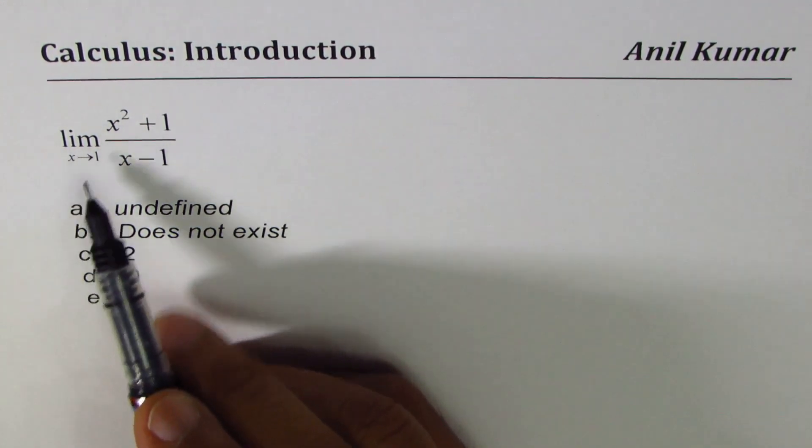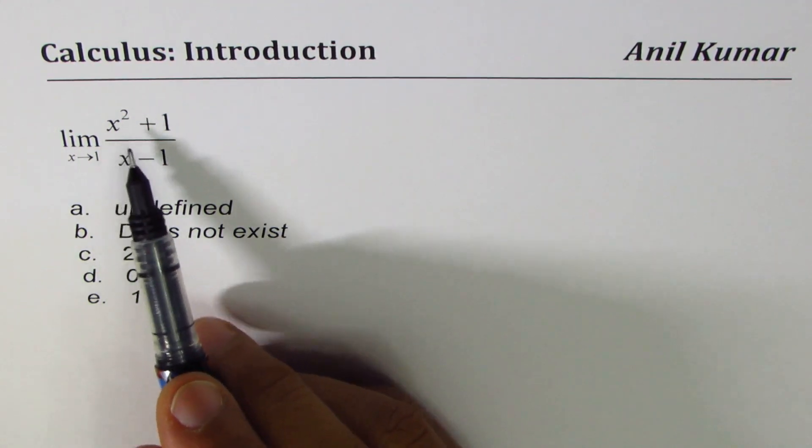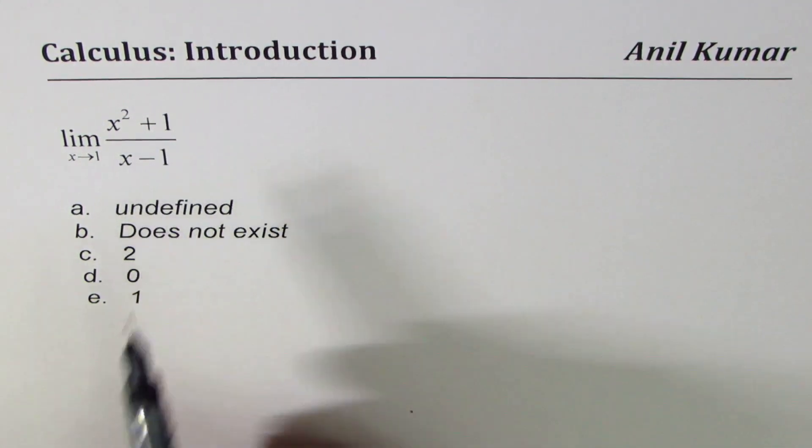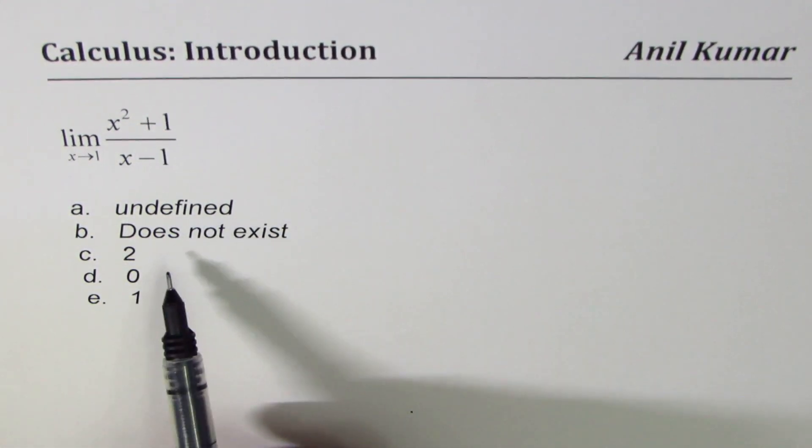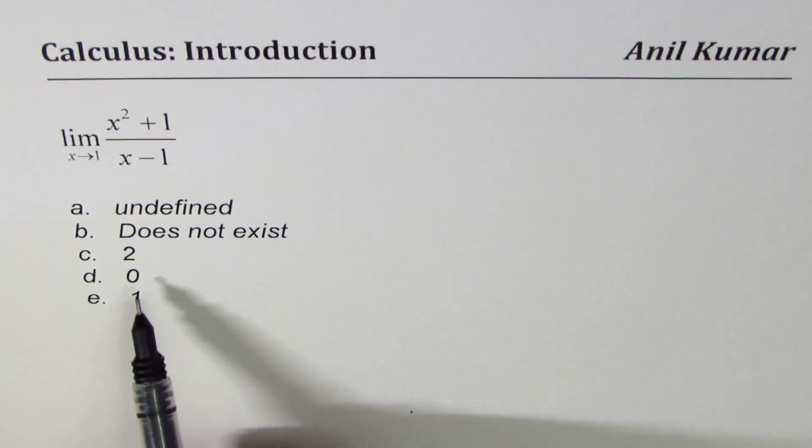Question here is, limit when x approaches 1 for x squared plus 1 divided by x minus 1 is undefined, does not exist, 2, 0, or 1.